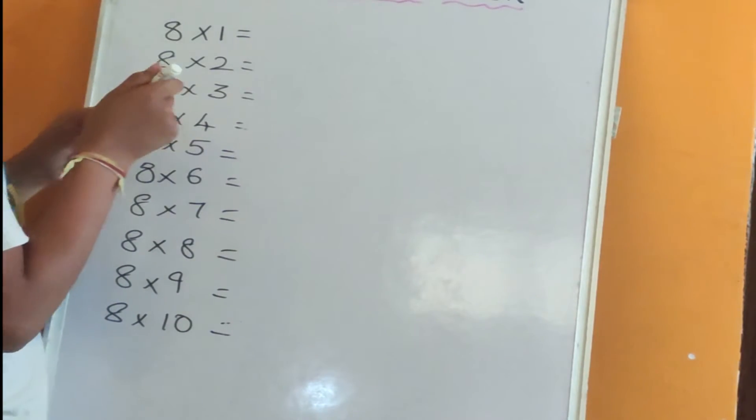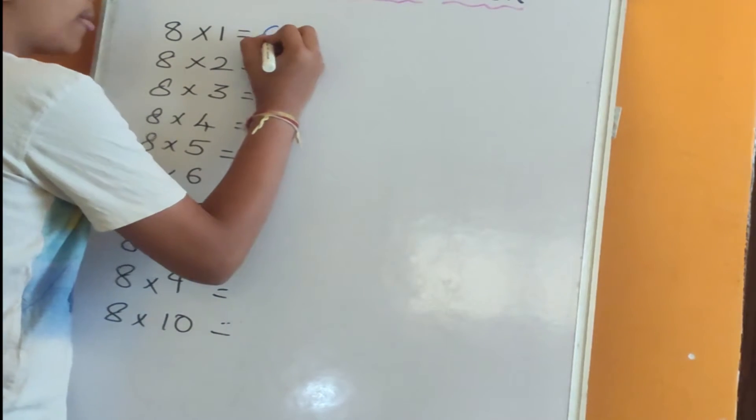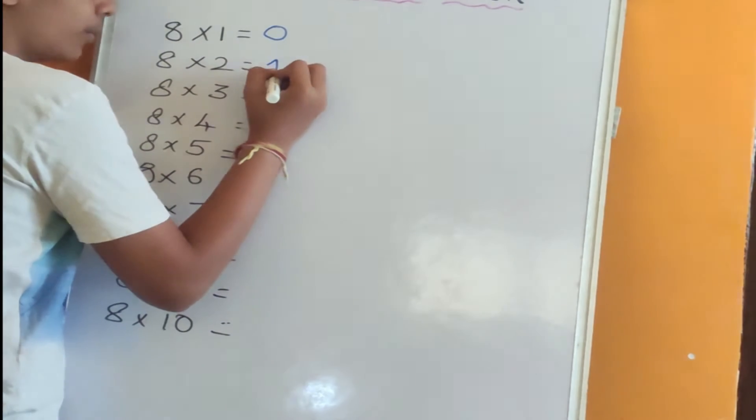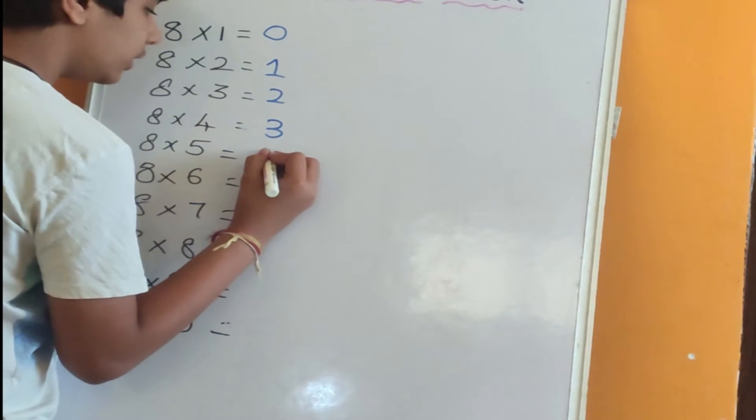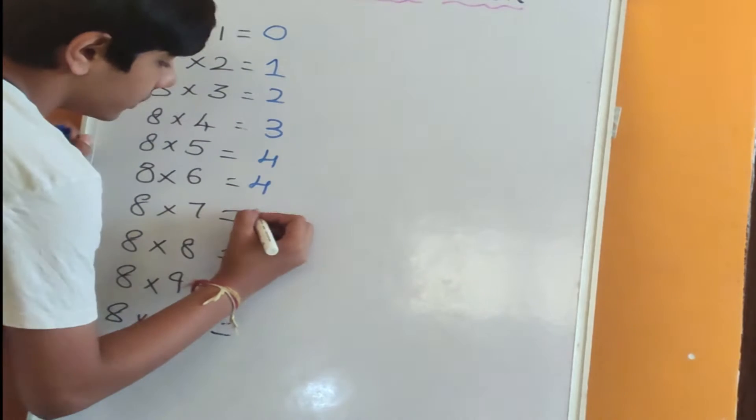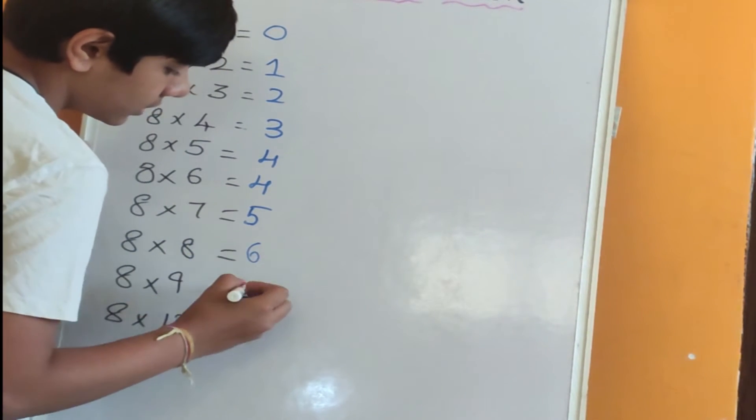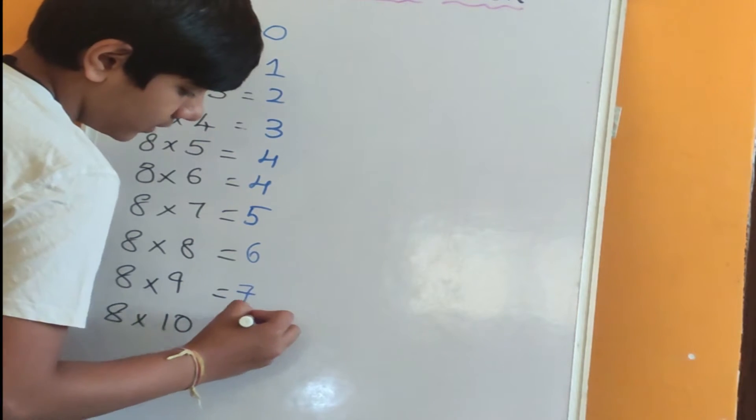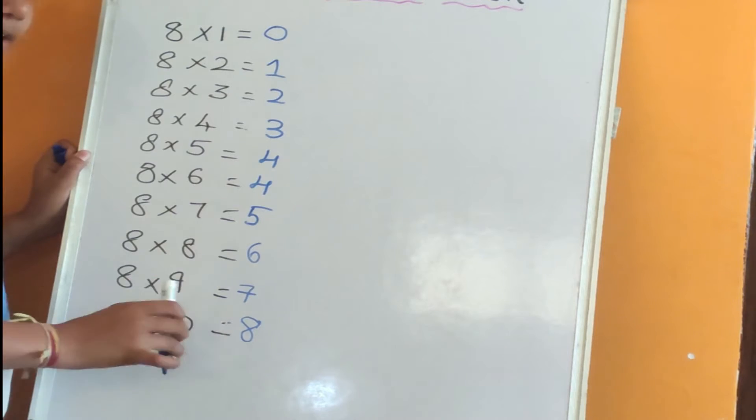First, for 8 table easy trick, we need to write numbers 0 to 8: 0, 1, 2, 3, 4. We need to repeat 4 two times, then 5, 6, 7, 8. So we have written numbers 0 to 8, repeating 4 two times.